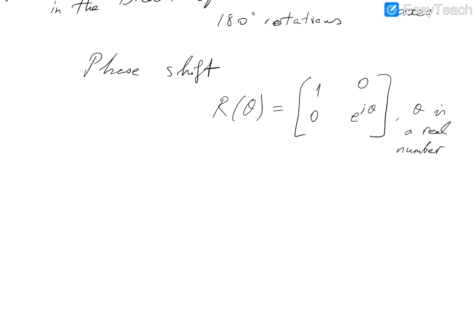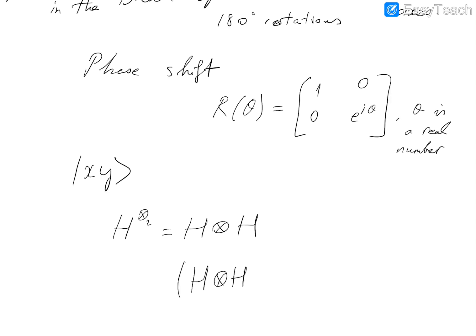What if we want to apply the Hadamard transformation on a two-qubit system |x, y⟩? We can take the tensor product of two Hadamard transformations: H₂ = H ⊗ H. So if we want to apply Hadamard on both x and y, we apply H ⊗ H to the two-qubit system |x, y⟩.